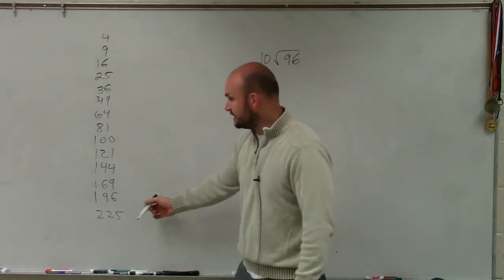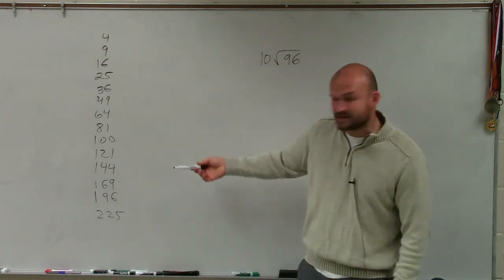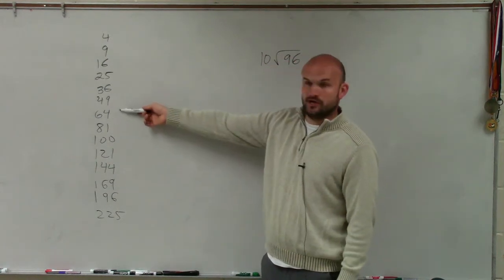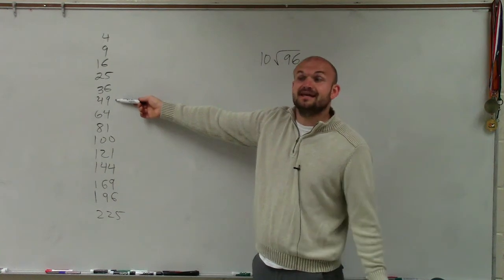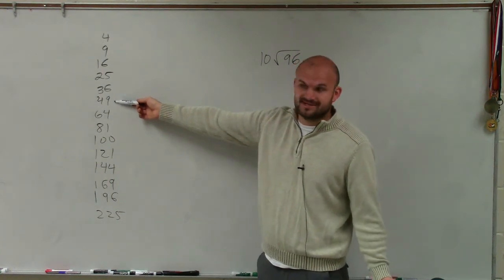So what we do is, obviously, the number has to be smaller than 96, right? So 81, no. 64, no. 49, double 49, that's going to be 98. Close, right? But it's not dividing into it.